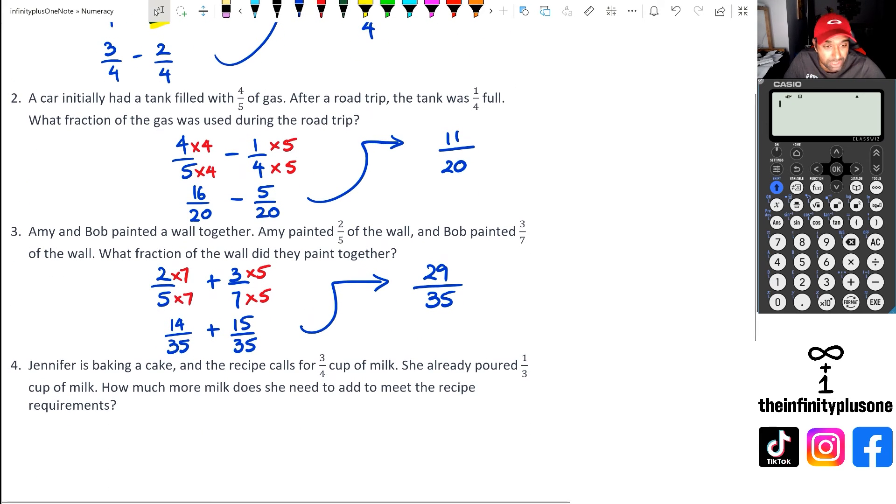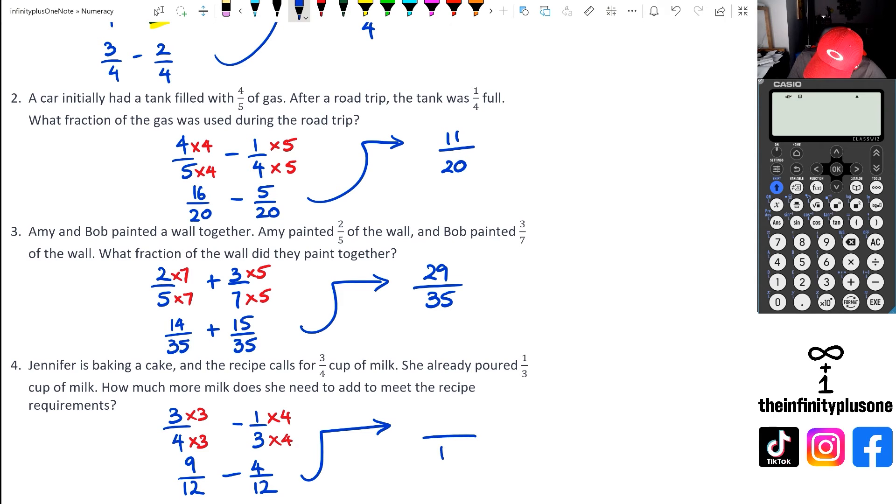Finally, looking at question four here, baking a cake recipe calls for three quarters cup of milk. She already poured a third of the milk, how much more milk does she need to add? So that means we've got 3/4 minus 1/3. And once again, we need to have the denominators to be the same numbers. So what we're going to do is four times three and three times three. And for the right hand fraction, we're going to do denominator, which is three times by four. And when we do this, we get 9/12 take away 4/12. And of course, that means the denominator now is the same, which is going to be 12. And then nine take away four is five.